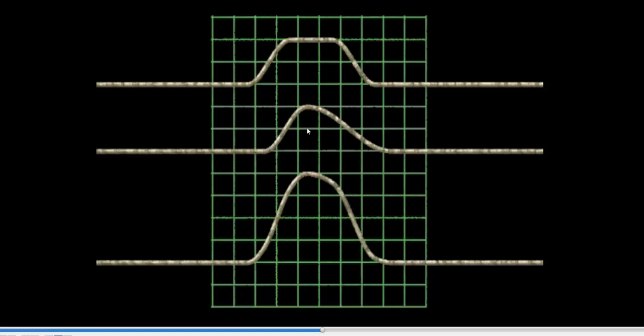This is something called constructive interference where two waves that are both crests or both troughs add together to make an overall larger waveform.